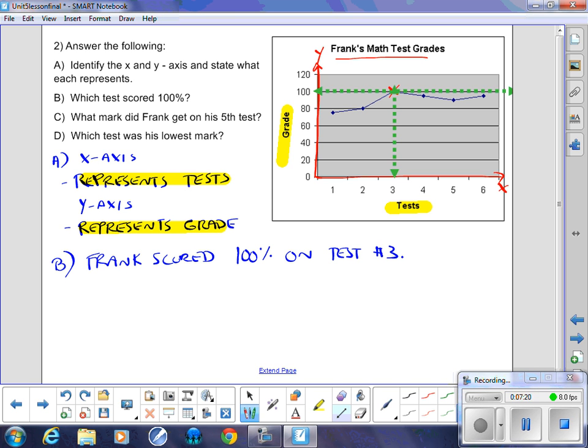C part. Which mark did Frank get on his fifth test? So we look up his fifth test, and it's right here. So with my eyes, I'm going to use a line here to help me out. So fifth test, I'm going to look up until I reach the coordinate that was graphed. There it is there. Once I find that coordinate, I then draw a line across. And it looks like 95%, or 90%, I guess. Somewhere in there. So Frank scored 90% on test five.